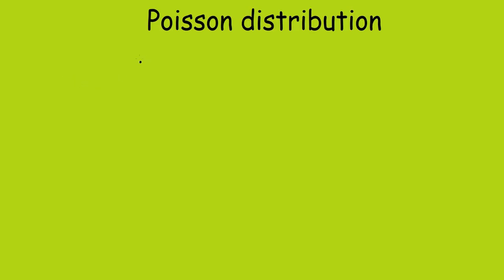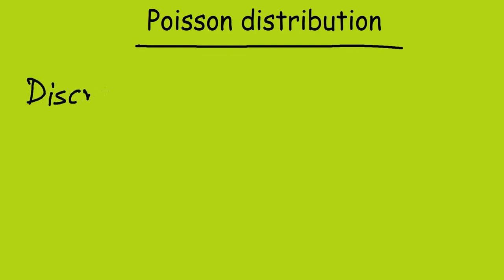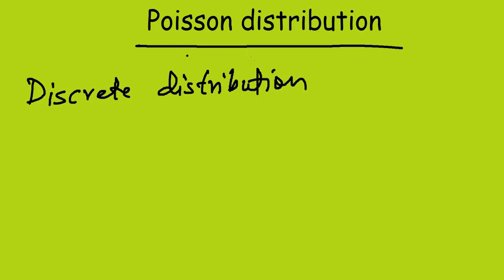In this short video we will discuss the Poisson distribution. One important thing to remember is that the Poisson distribution is a discrete distribution. We will first see the formula for the Poisson distribution and then solve one or two problems.